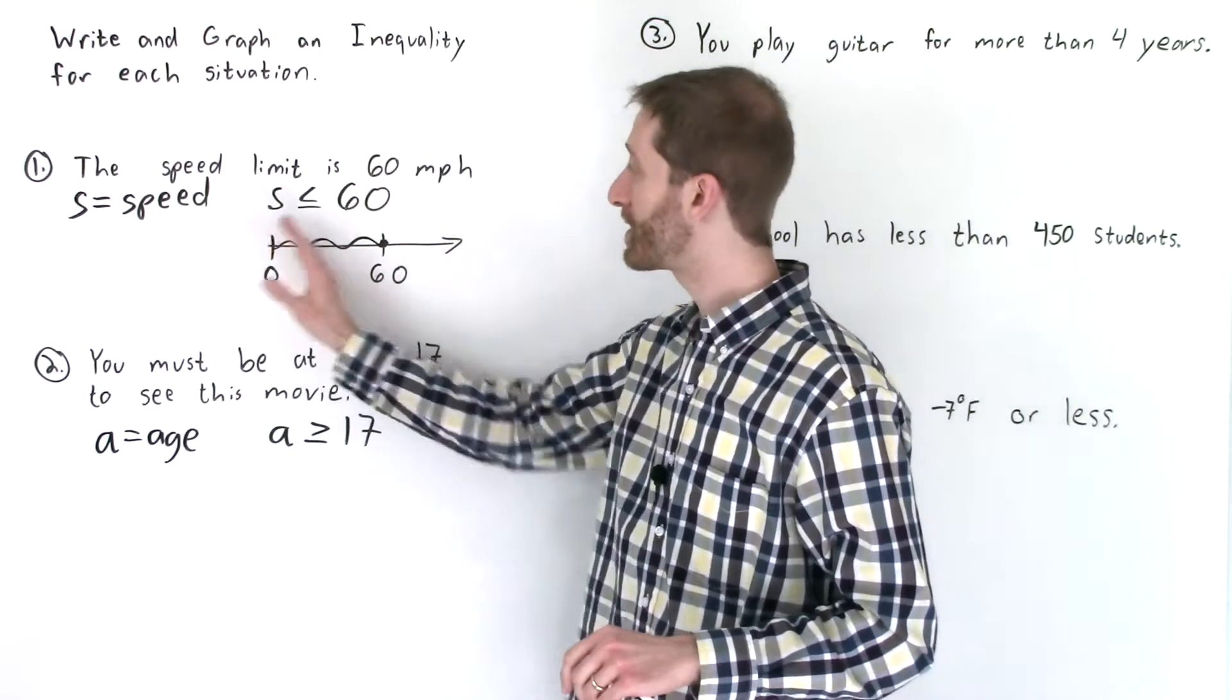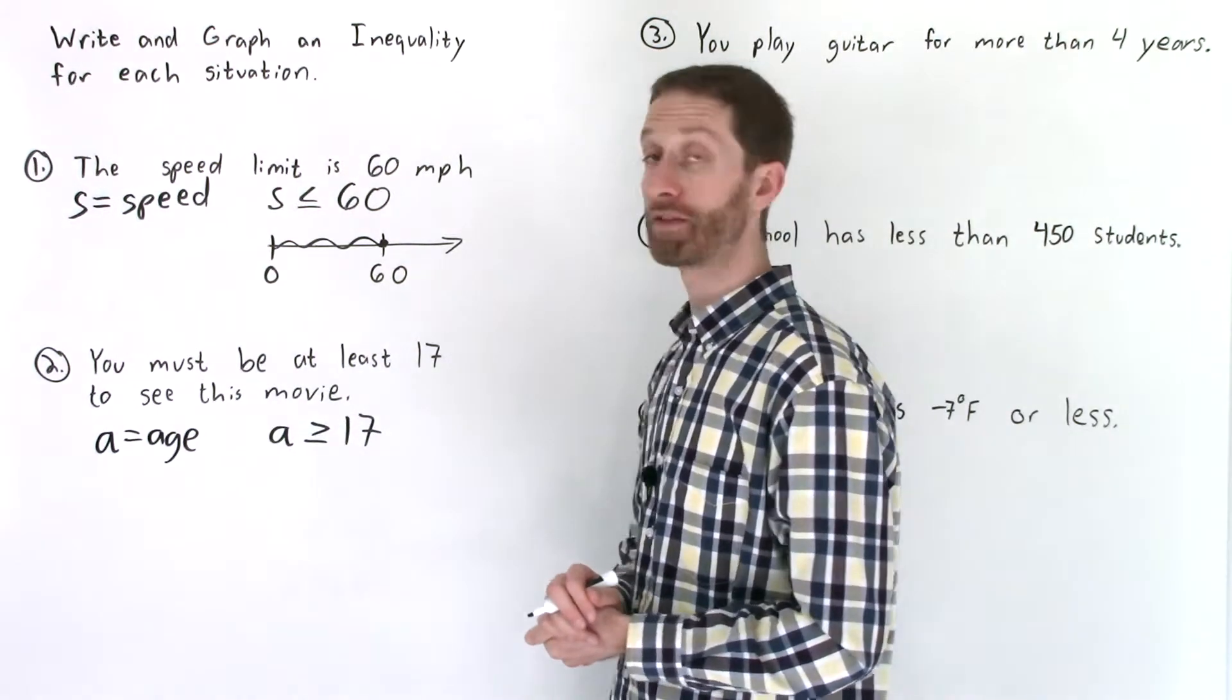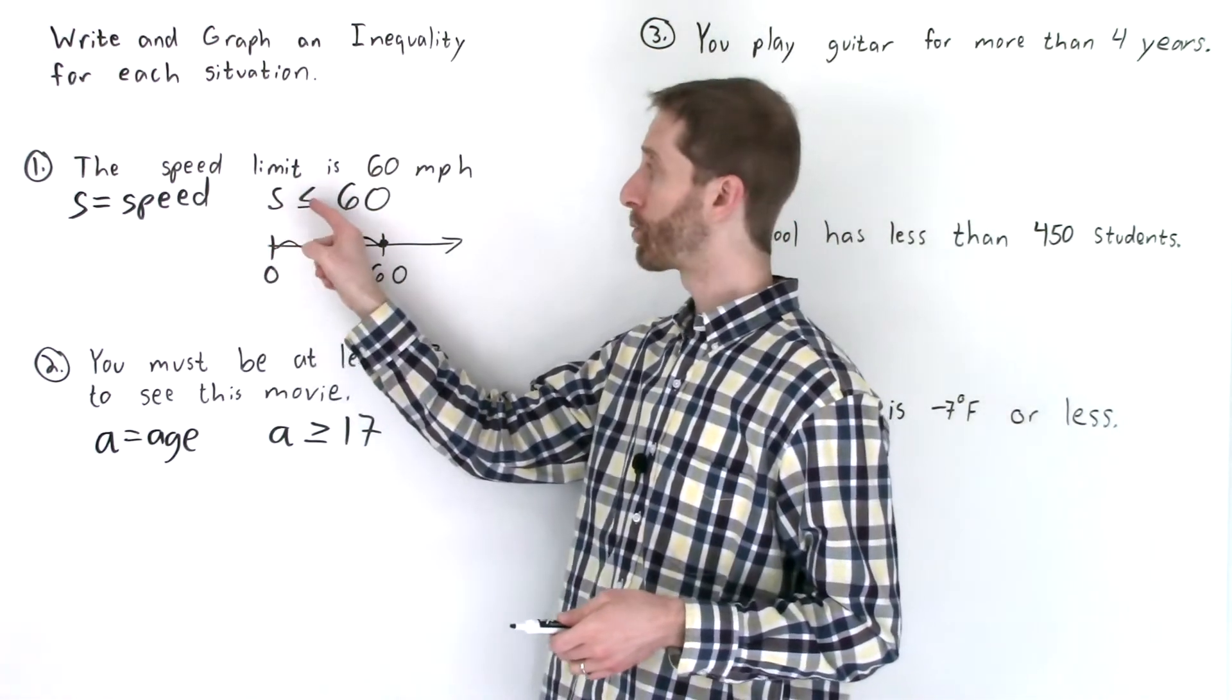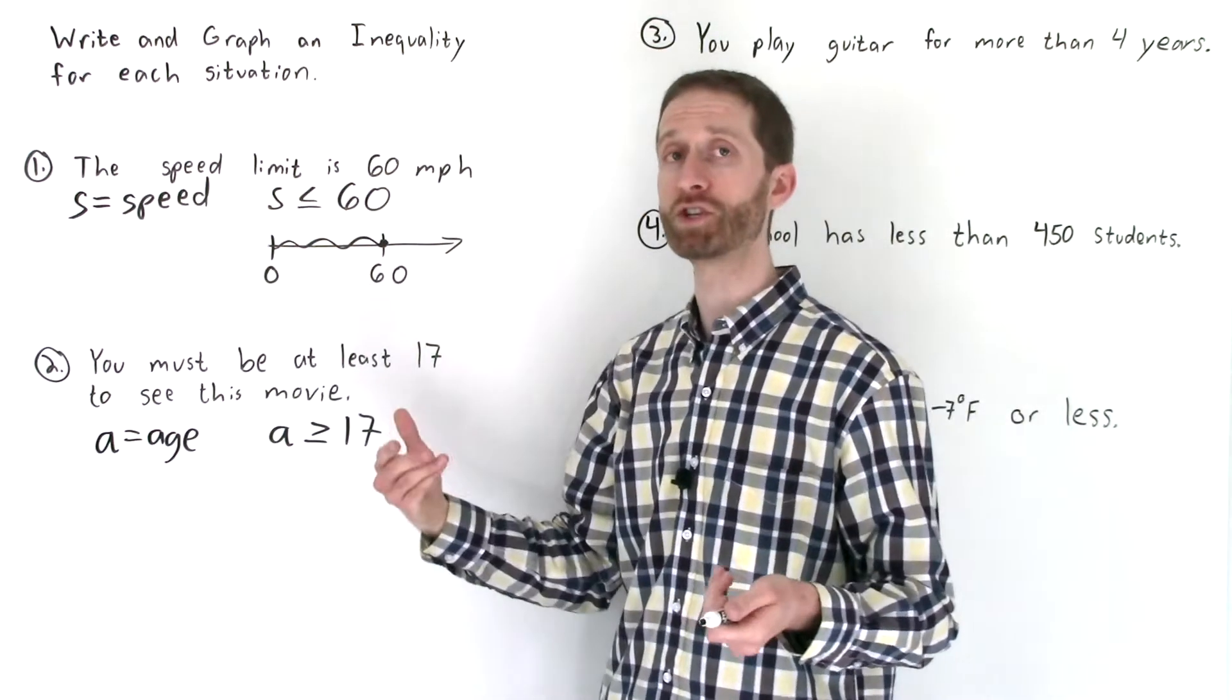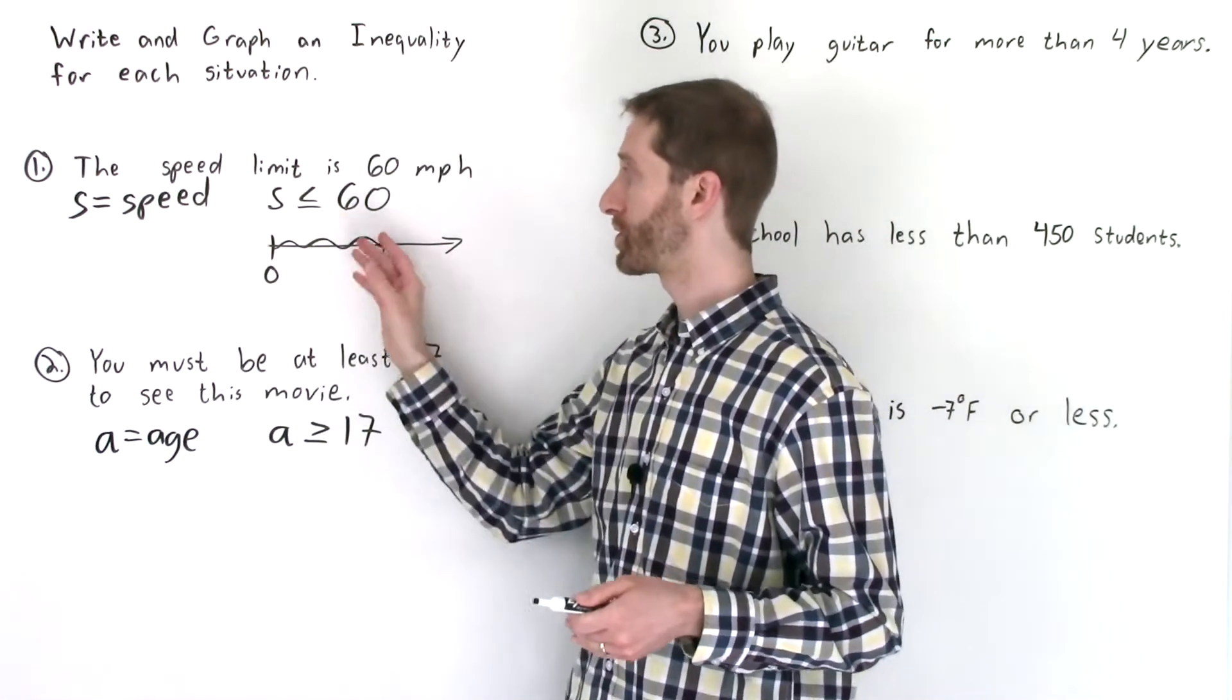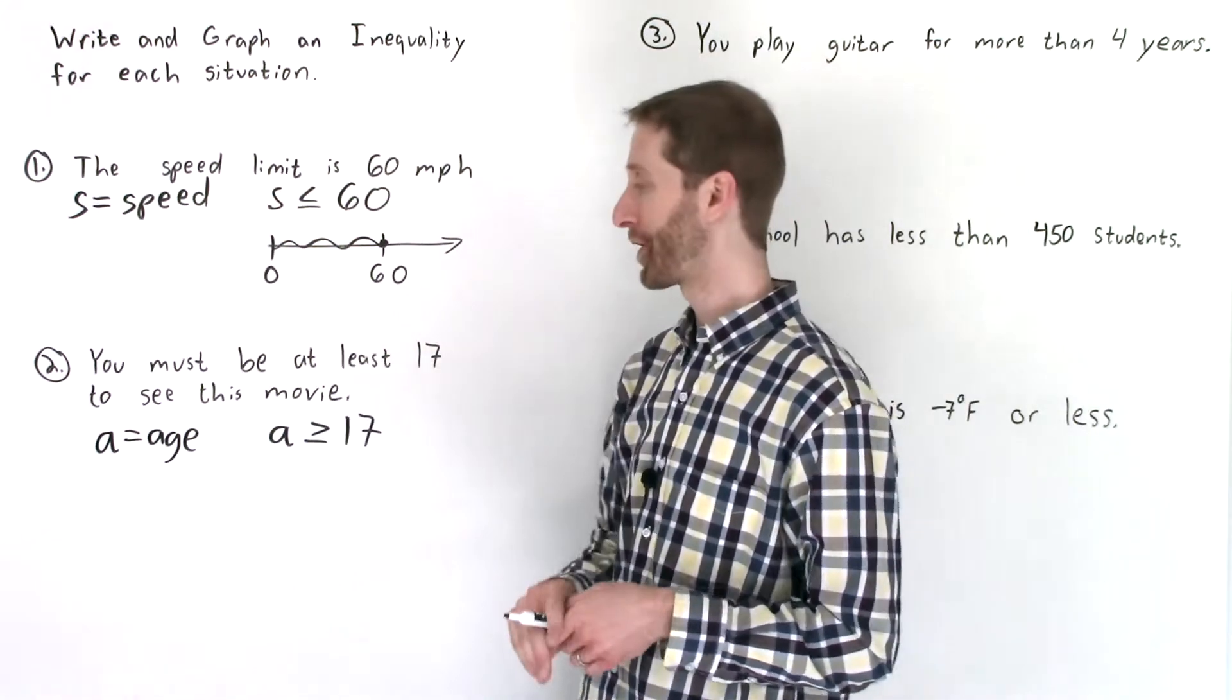Now I'm actually going to stop the problem at zero because you can't have negative speeds. But any speeds in this interval 0 to 60 work for us as we talked about earlier in the video. Some teachers teach it this way: if the variable's on the left the direction in which the inequality sign is pointing is the way that you shade. I'm not a big fan of that. I'm a bigger fan of understanding that you're taking all numbers less than or equal to 60.